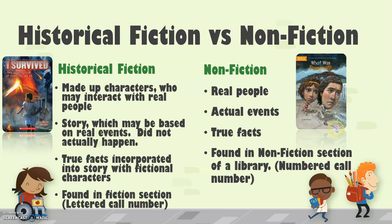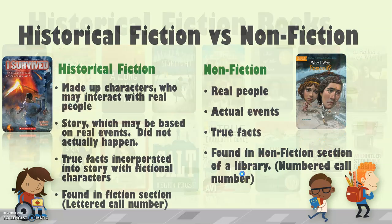I Survived is historical fiction — Pompeii was a real thing, but the characters in the book are not real. What Was Pompeii, which is part of the Who HQ / Who Was / Where Was series — I call them the big-headed biographies — is all about what really happened in Pompeii: true facts, actual photographs showing the remains of people from Pompeii. In a nonfiction book you'll find a timeline, actual photographs, true facts, maybe even a biography. That's the difference between those two.